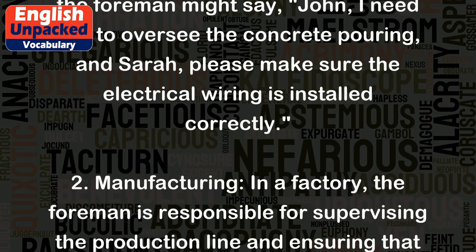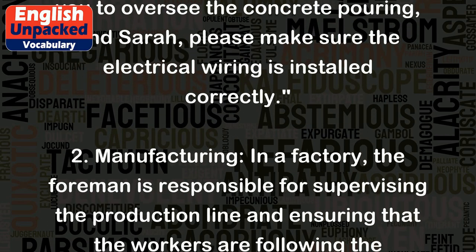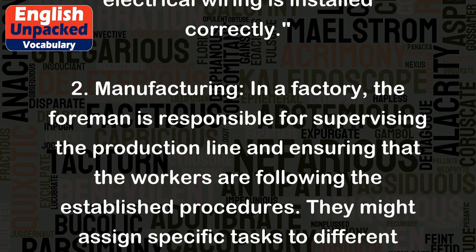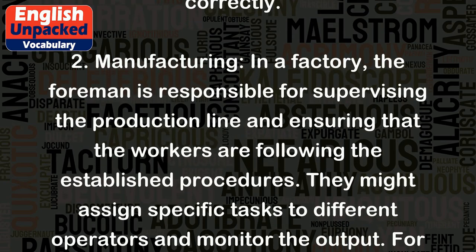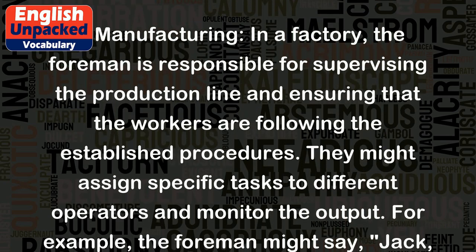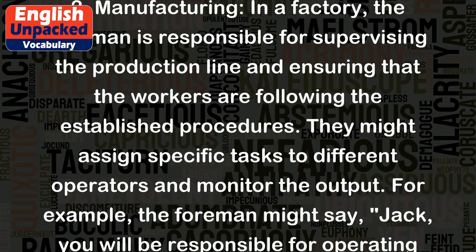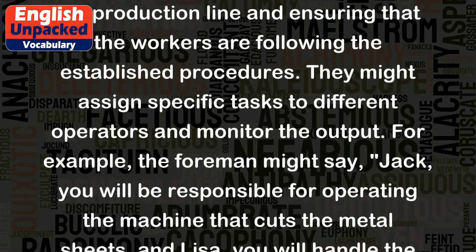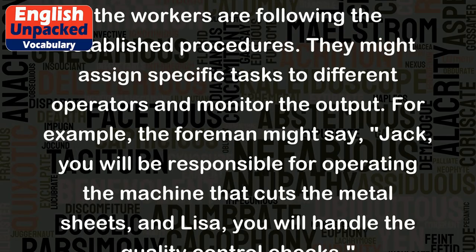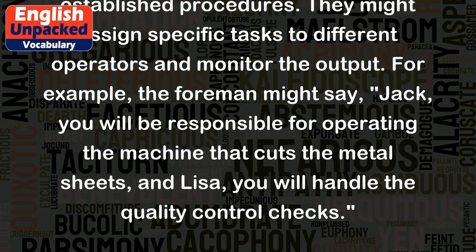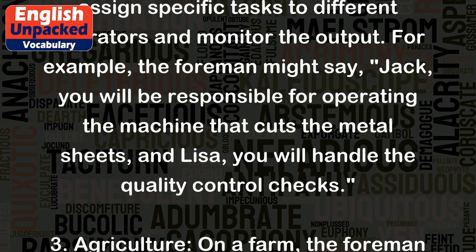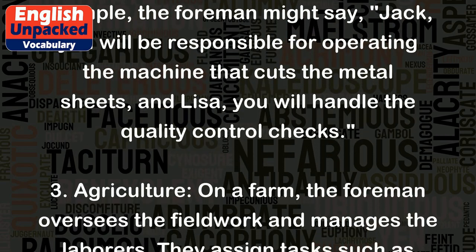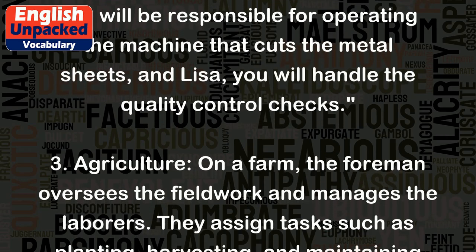2. Manufacturing: In a factory, the foreman is responsible for supervising the production line and ensuring that the workers are following the established procedures. They might assign specific tasks to different operators and monitor the output. For example, the foreman might say, "Jack, you will be responsible for operating the machine that cuts the metal sheets, and Lisa, you will handle the quality control checks."